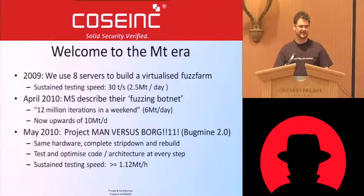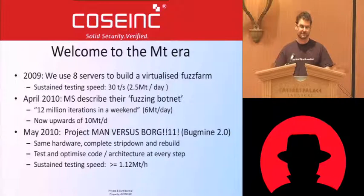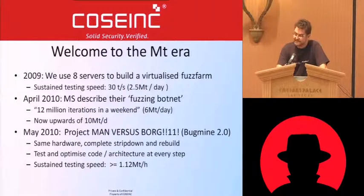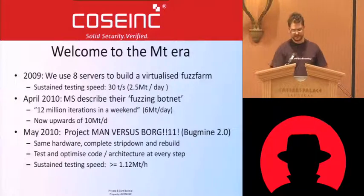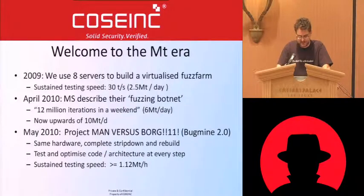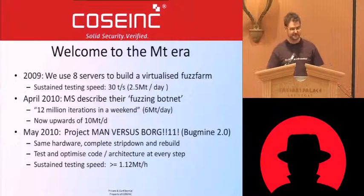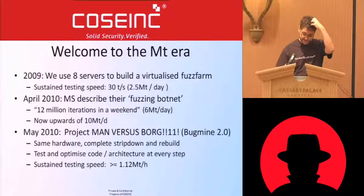Then Tom and the office guys built a DFF — distributed fuzzing framework, which is an amazingly imaginative name — and they got up to 12 million iterations in a weekend, which is about six mega tests a day. Now it's more like 10 mega tests per day. I got competitive because they released better numbers than mine, so we stripped the whole thing down, rebuilt all the software, optimized everything, and now we're doing about a tick over one mega test per hour — one million file fuzzing tests per hour. That's twice as fast as whatever thousand machines Microsoft are using, running on eight old servers.